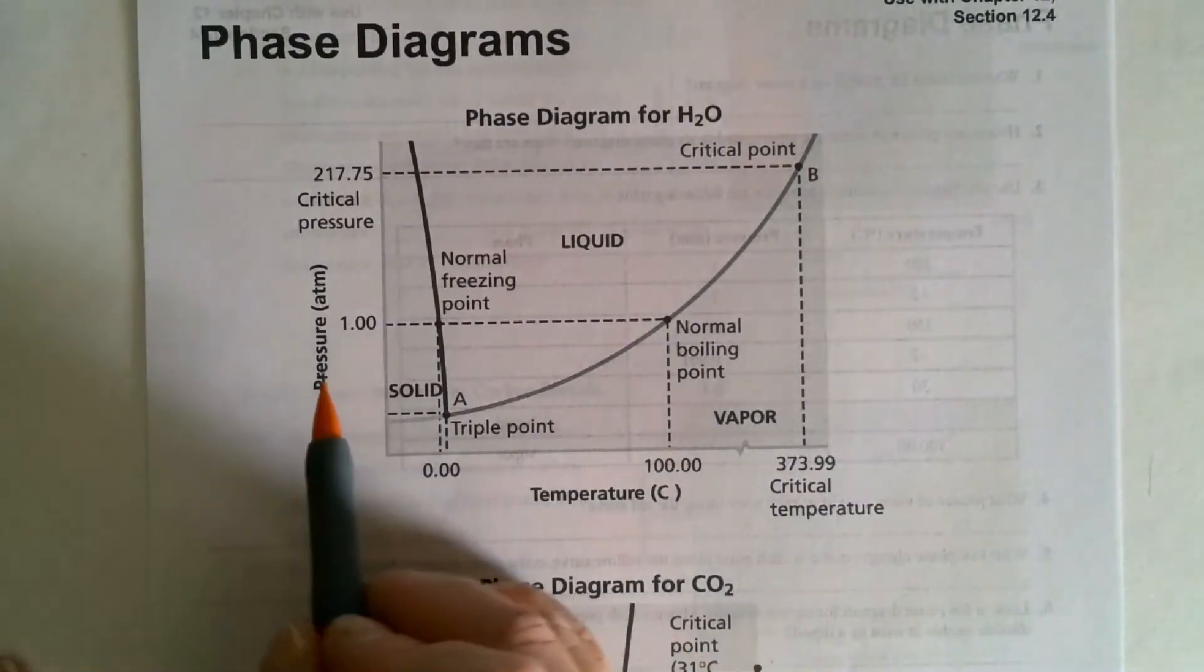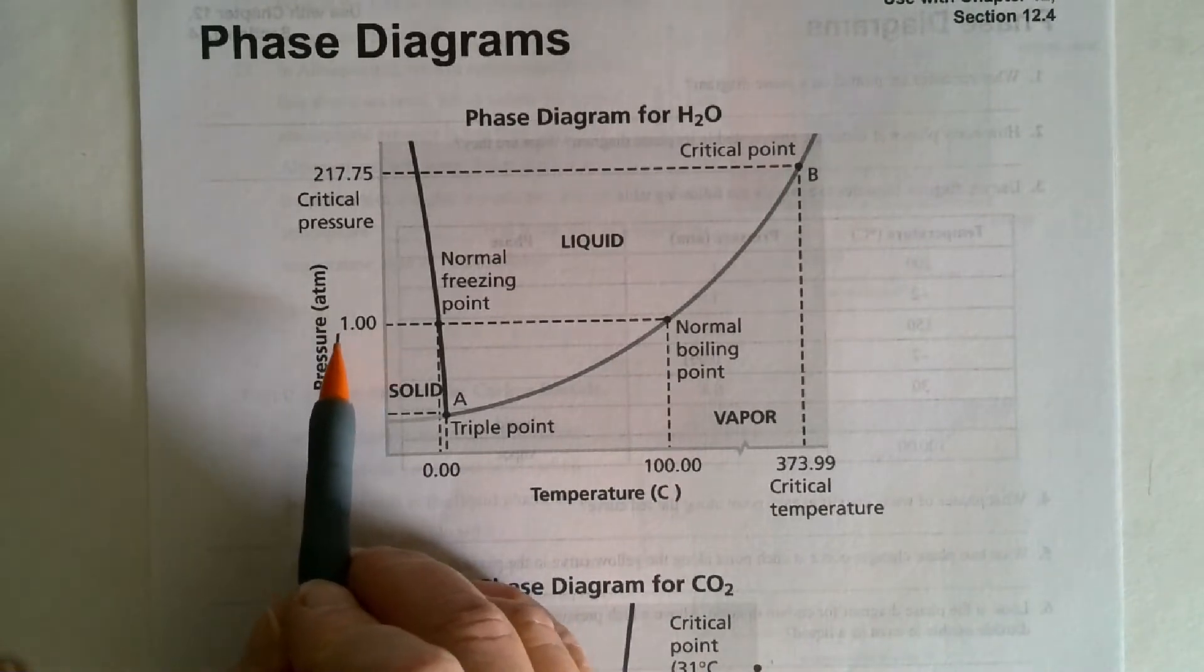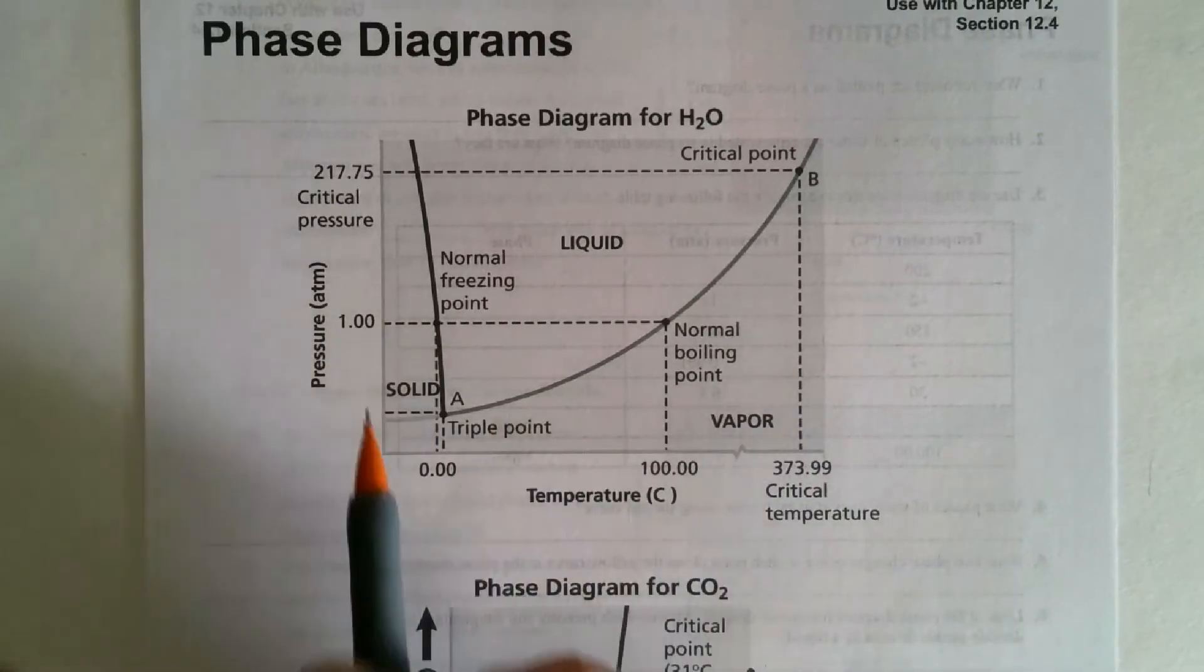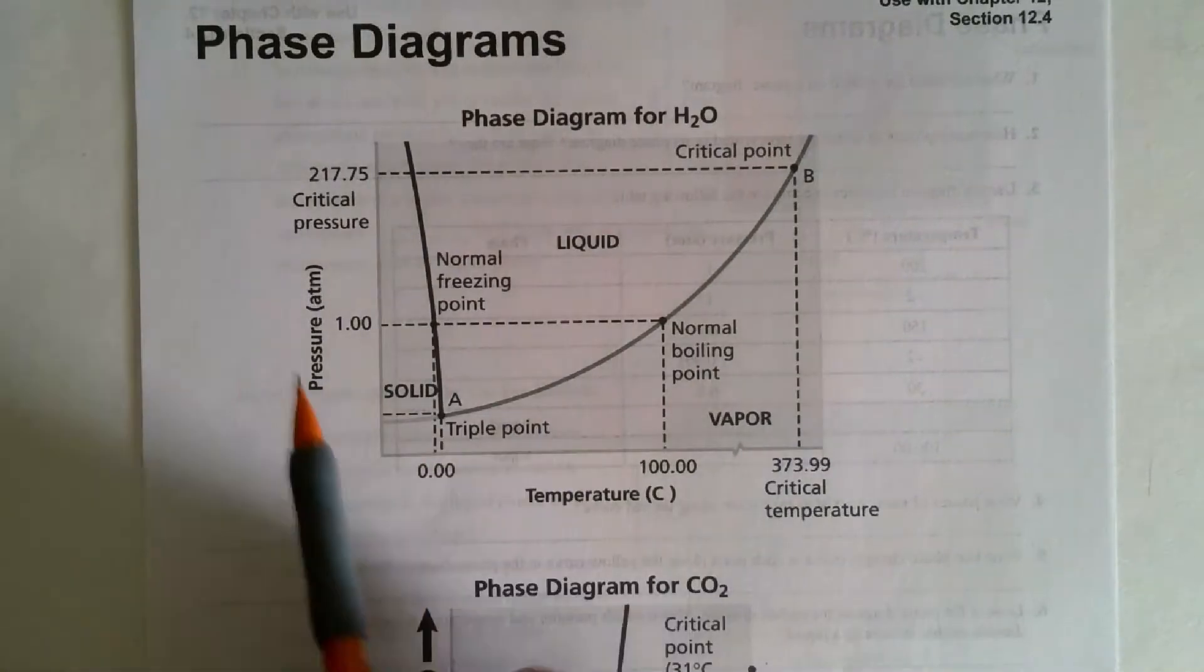And what this means is if you look at it, pressure is in atmospheres. And I need to tell you right now, there's a multitude of ways that you can measure pressure. On a PowerPoint, we said that pressure would be measured in atmospheres, torr, millimeters of mercury, kilopascals, pounds per square inch. All those indicate pressure.